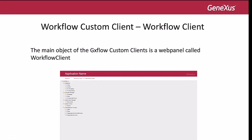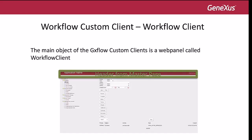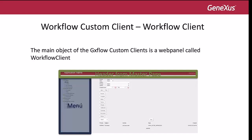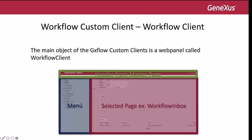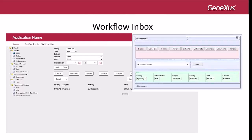The main object of the workflow Custom Client is a web panel called Workflow Client. If we click the inbox link, the workflow inbox code appears in the right part of the web panel. This page has three parts: the header, which is taken from the master page; a tree menu with all the functions provided by the Custom Client; and the selected page displayed on the right. In this case, selecting the inbox shows the workflow inbox web panel. The workflow inbox has workflow filters, and the first element is the workflow filter.